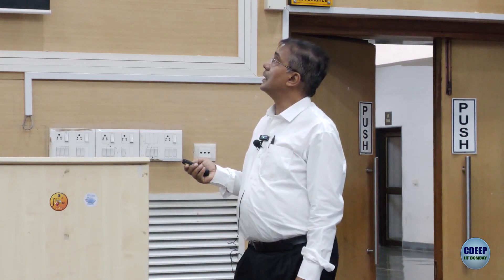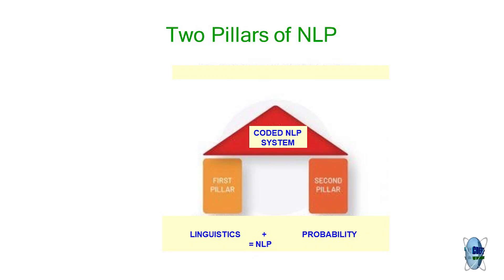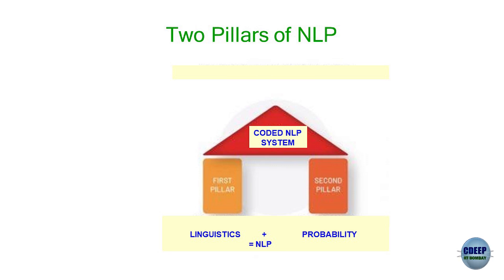Now we move to essential linguistic concepts, reminding ourselves that we have seen this picture: the two pillars of NLP are linguistics and probability. But finally, of course, everything is manifested in the form of code — code running on a powerful system doing something very useful like a chatbot, an intelligent information retrieval system, or a translator.